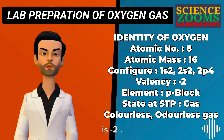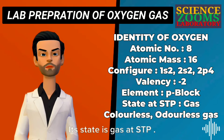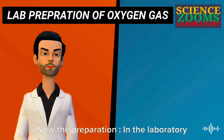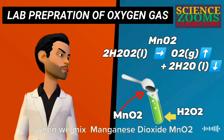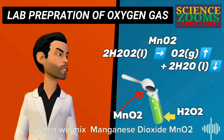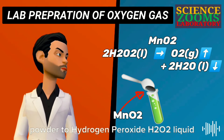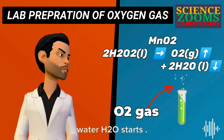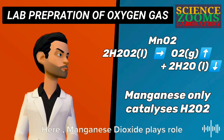The valency of oxygen is minus 2. It is a p-block element. Its state is gas at STP and it is a colorless, odorless, and tasteless gas. For the laboratory preparation, when we mix manganese dioxide MnO₂ powder with hydrogen peroxide H₂O₂ liquid, the production of oxygen gas O₂ and water H₂O starts.